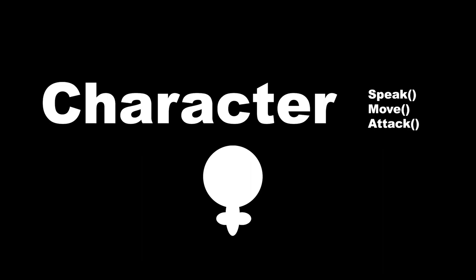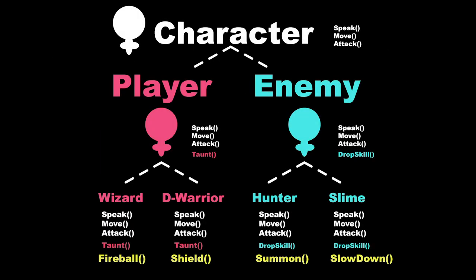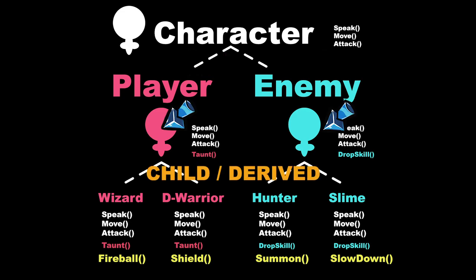For example, we might have a class called Character. This class covers all of the things characters should do in our game — such as speak, move, and attack. We then have two classes, Enemy and Player, which inherit from the Character class. These two classes would also have the same three functions. We will then have two more child classes of Player: Wizard and DragonWarrior. These already behave like players, which in turn behave like characters. We have much less code to write because we are reusing the code from Character and Player. When talking about inheritance, the class being inherited from is called the parent or base class, and the class that is inheriting is called the child or derived class.